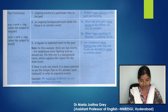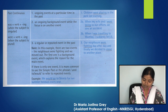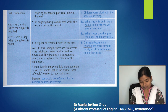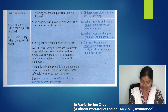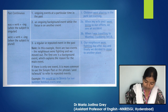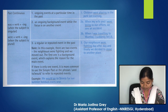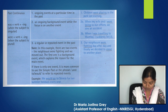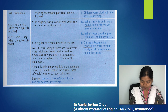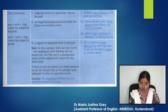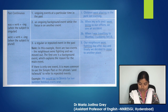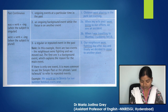Past continuous is also used to talk about a regular or repeated event in the past. For example, 'Our neighbours were fighting day after day and finally we decided to move to another place.' Note: in this example there are two events — the neighbours were fighting, and we moved out. The first is a background event explaining the reason for the main event. If there is only one event, it is more common to use simple past or the phrases 'used to' or 'would.' For example, 'We would go to Shimla for our summer holidays every year.'